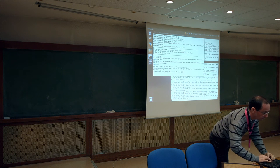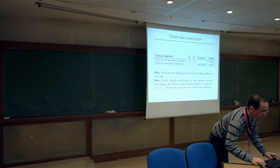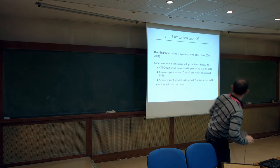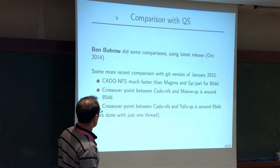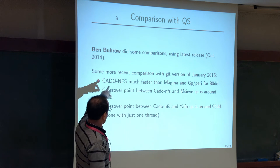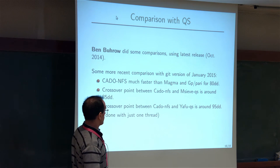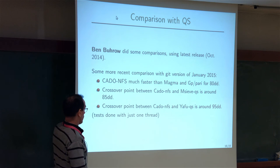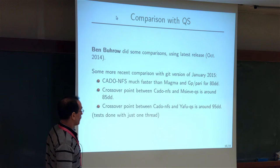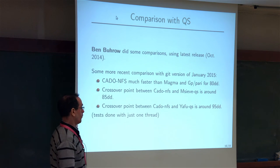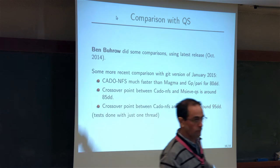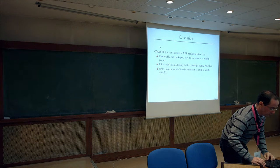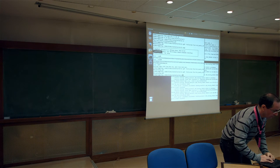We have some comparisons with different software. Basically CADO-NFS is faster than Magma and GP from about 80 decimal digits. Compared to the quadratic sieve in msieve, which is quite efficient, CADO-NFS is faster from about 85 digits. The fastest quadratic sieve is YAFU, and CADO-NFS wins from about 95 digits. This is with just one thread.